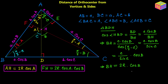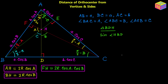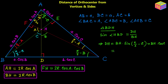Using the same right triangle BDH, sin(HBD) = DH/BH, so sin(π/2 − C) = DH/BH. Thus DH = BH·cos(C). Since BH = 2R·cos(B), we get DH = 2R·cos(B)·cos(C). This is the distance of the orthocenter from side BC.